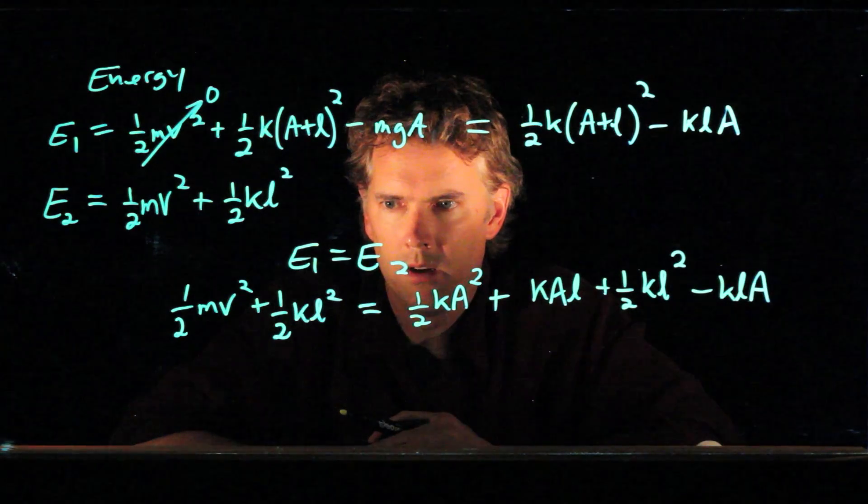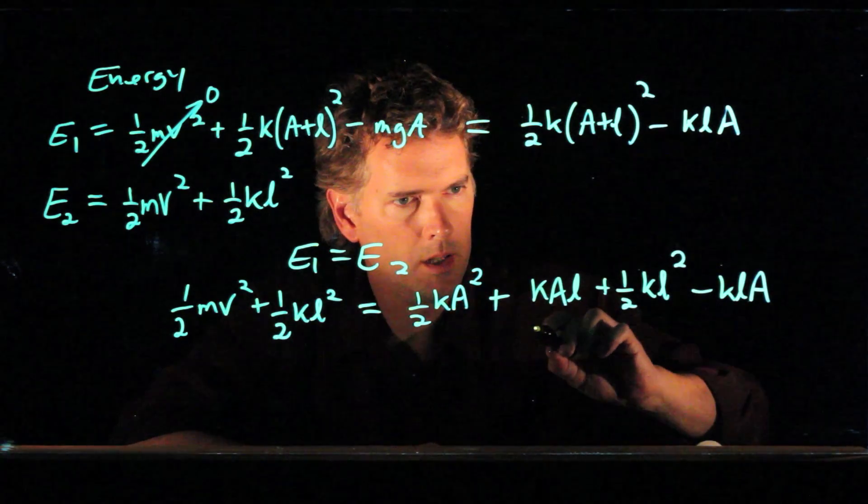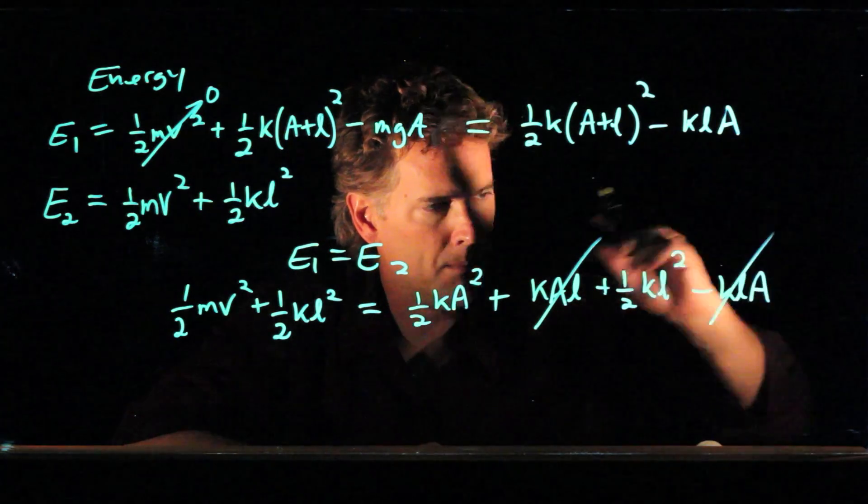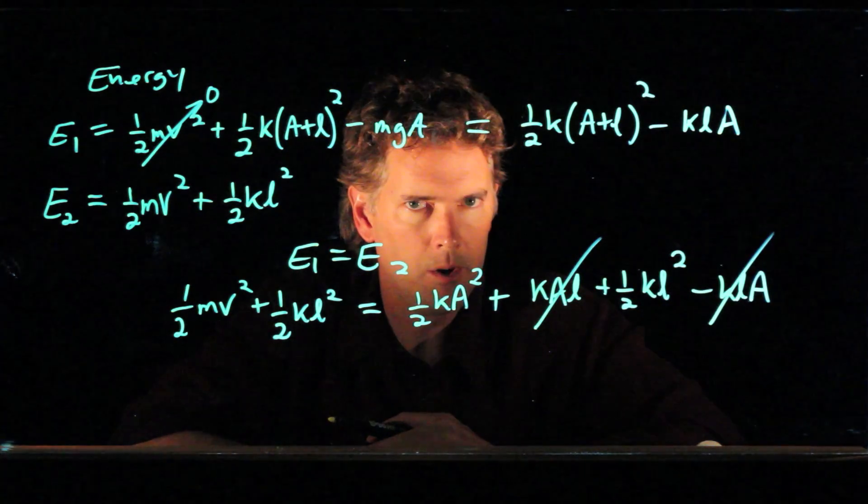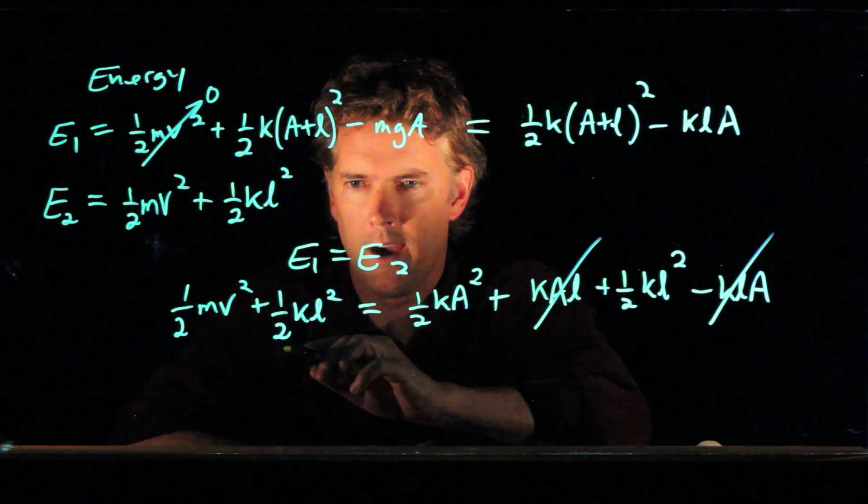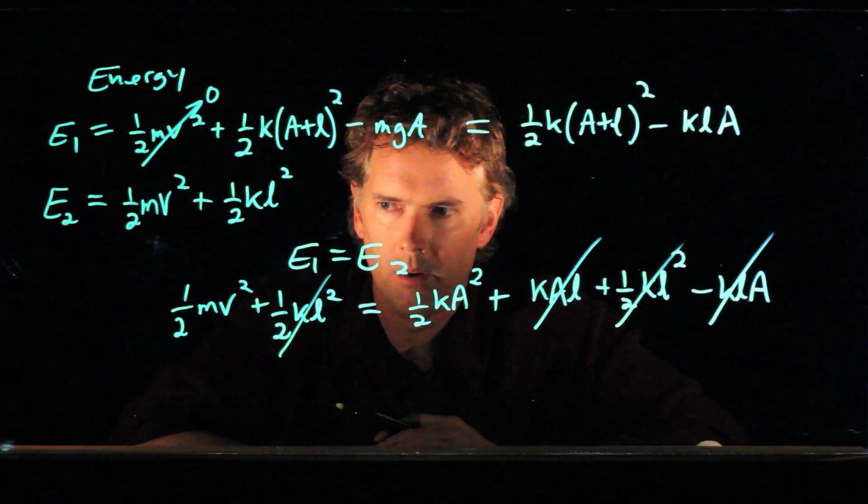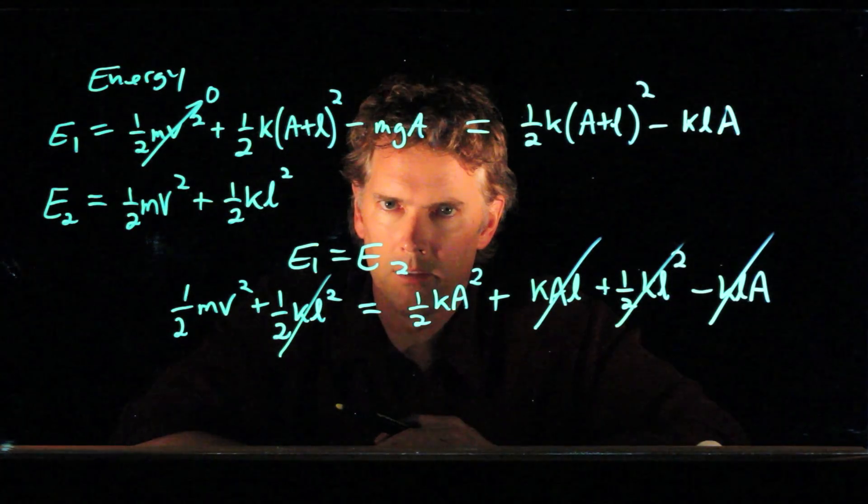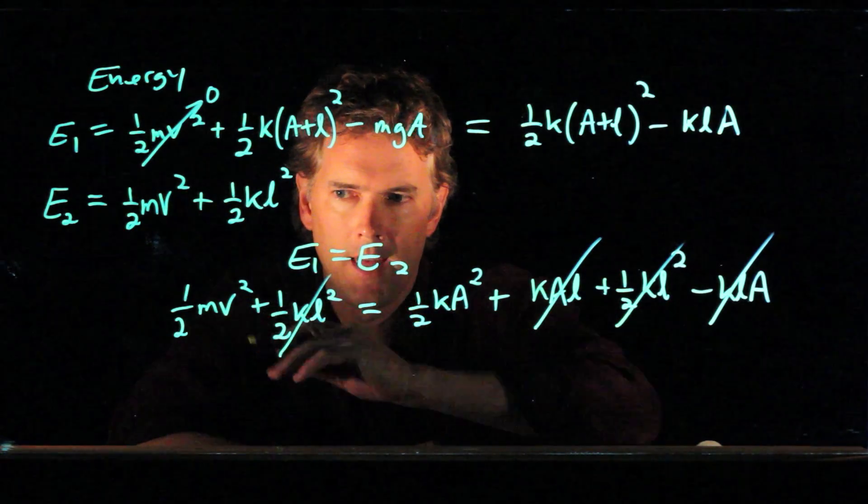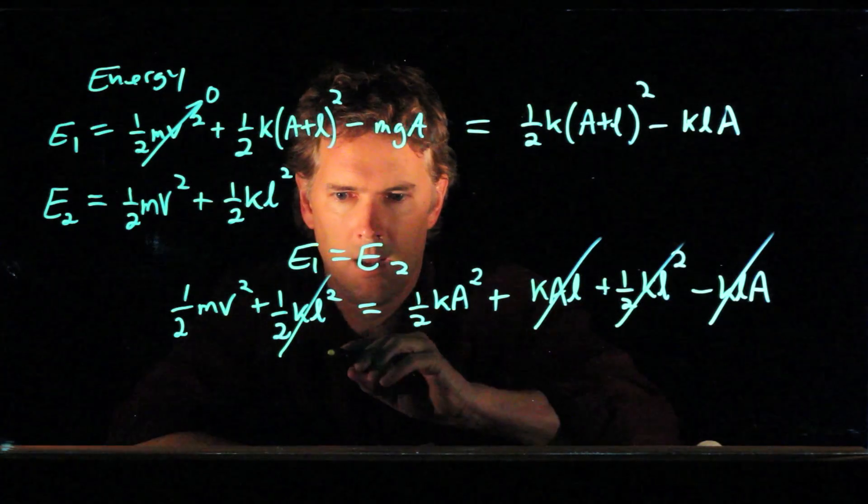And now look what happens. K A L and minus K L A, we can get rid of those. And one half K L squared is over there as well, so we can get rid of those. And that looks very familiar. That looks like our old equation.